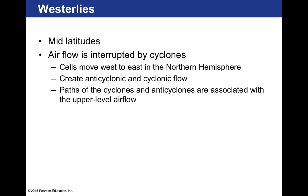The westerlies are in the subtropical mid-latitude region, where airflow is interrupted by cyclones — low pressure zones. Cells always move west to east in the northern hemisphere, with both anticyclonic and cyclonic flow. The paths of cyclones and anticyclones are associated with upper-level airflow — the jet stream — which moves from west to east. All weather coming to Pennsylvania, for example, always starts in the western part of the United States and moves eastward — sometimes from the north bringing cooler systems, sometimes from the south bringing warmer systems, but always moving west to east.